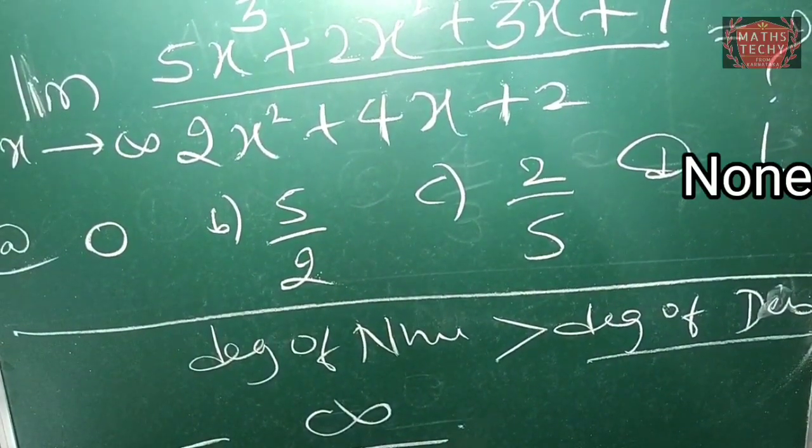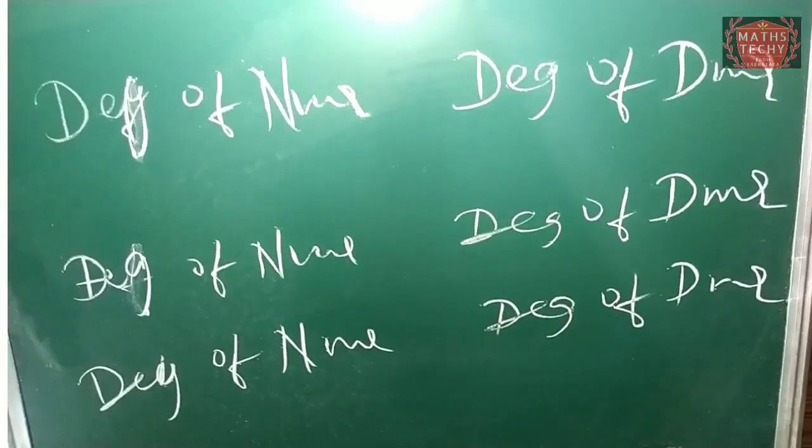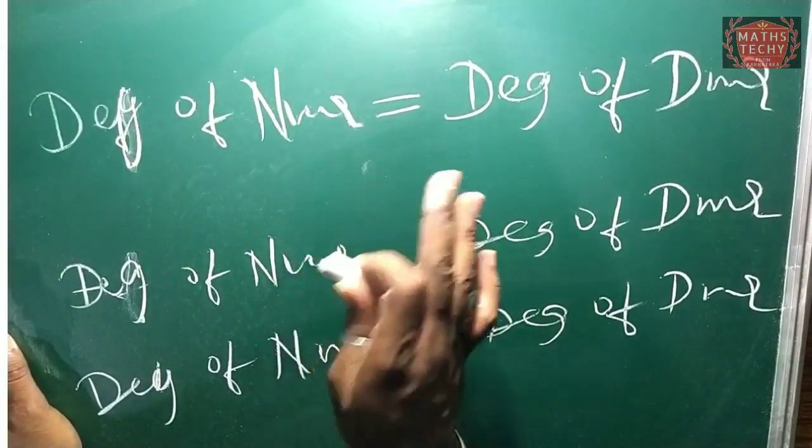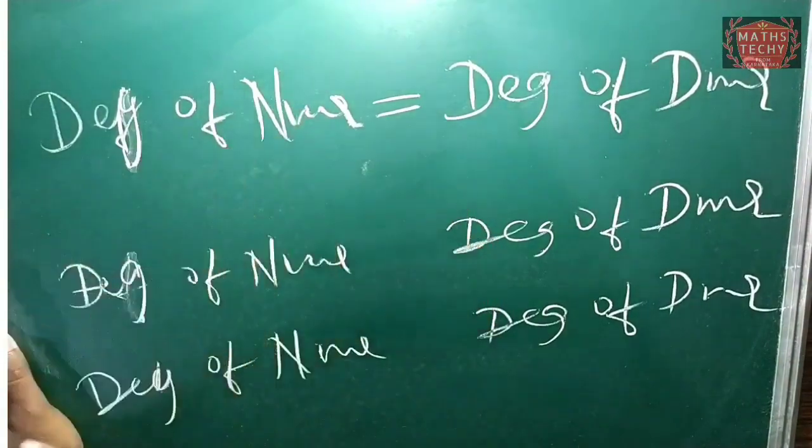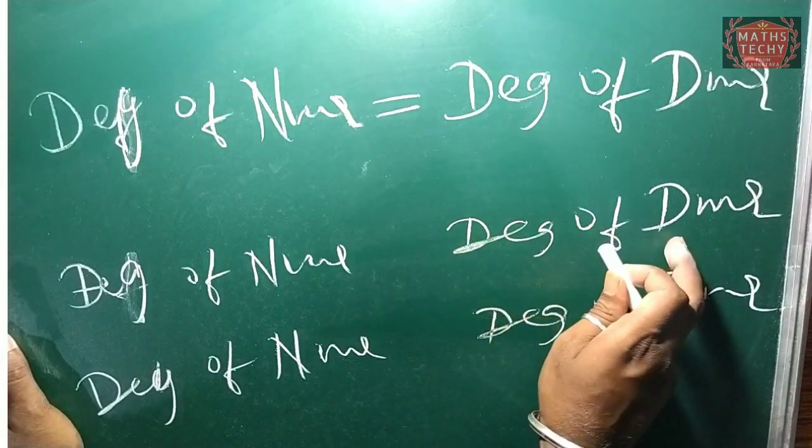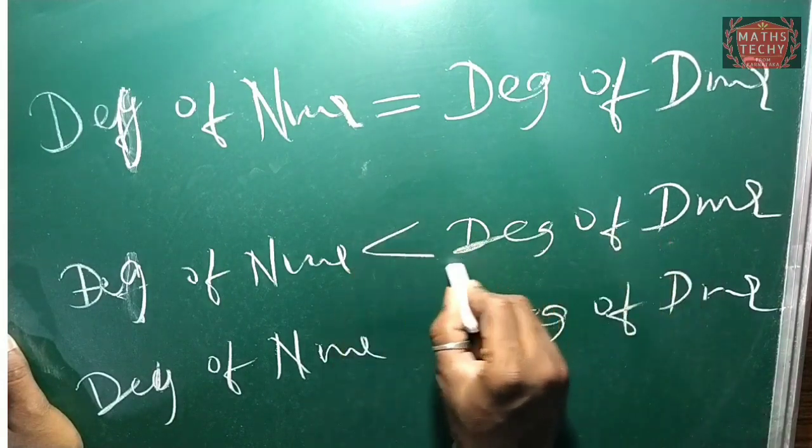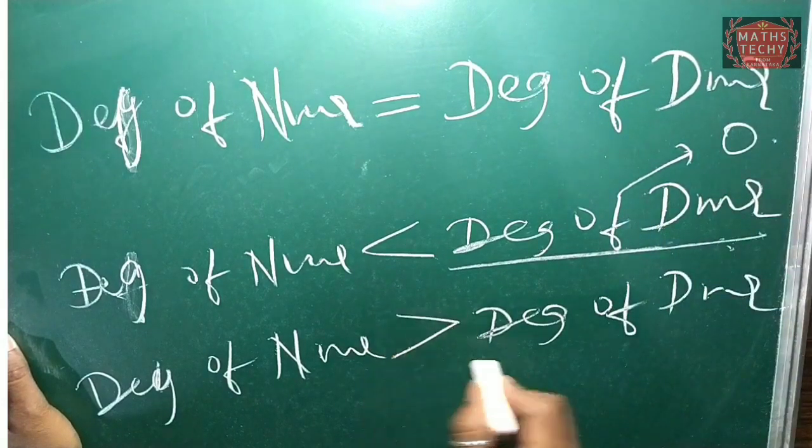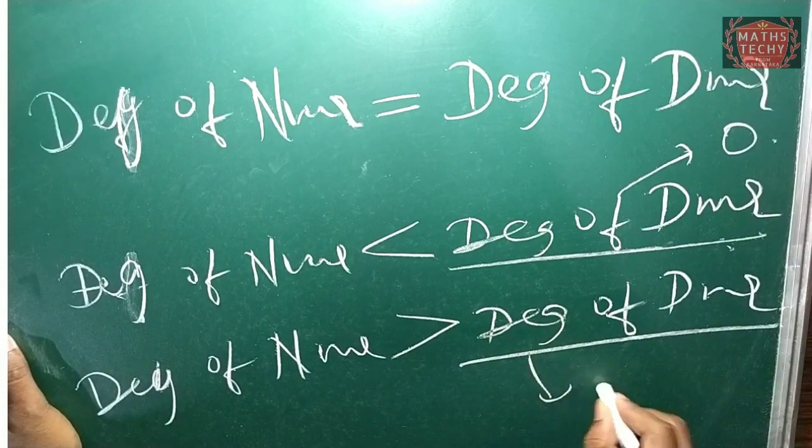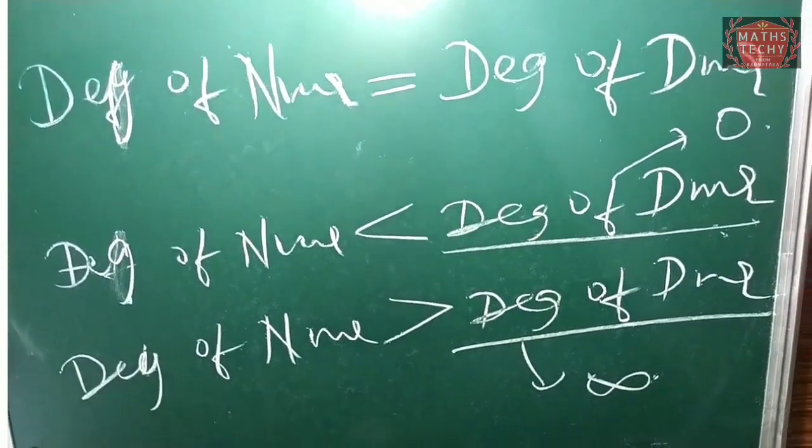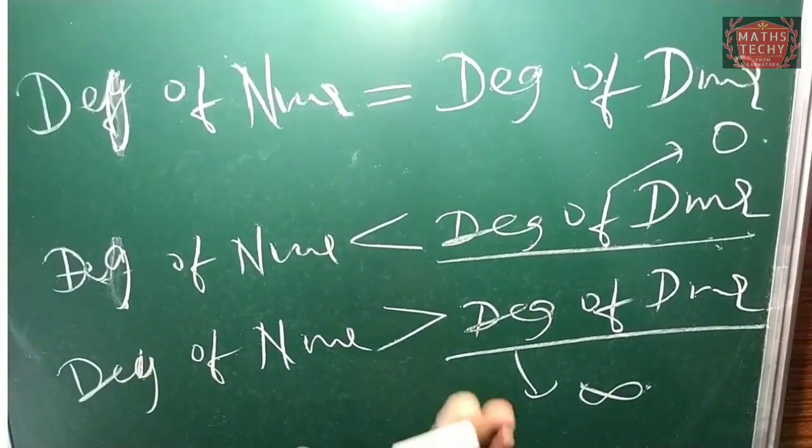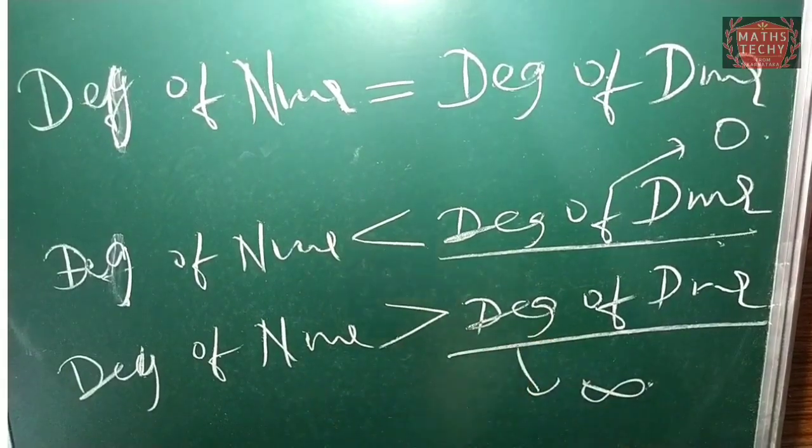Remember these things. Three tips problems. So when equal, numerator with the denominator, I want to coefficient. When the denominator is greater, the answer is zero. When the numerator is greater, the answer is infinity. Simple. I want to take a trick. Within five seconds, you can solve this. This is just a demo class.